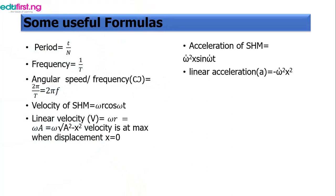The first one is period. Period equals the time taken over the number of oscillations that the body oscillates. The second one is frequency. Frequency equals one over the period. The angular speed or angular frequency equals two pi over the period, or two pi f.